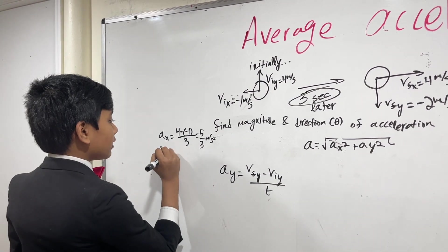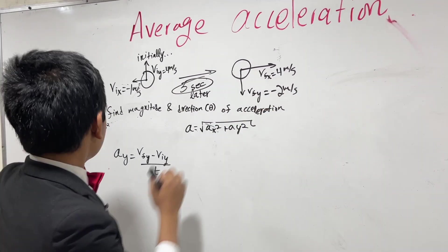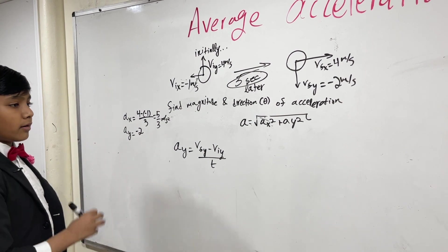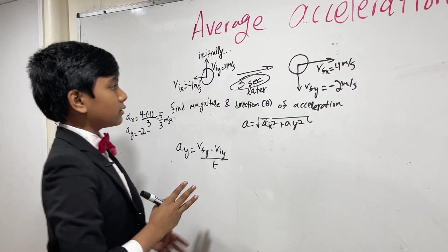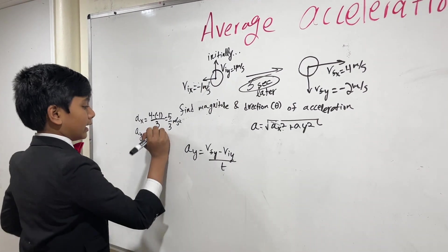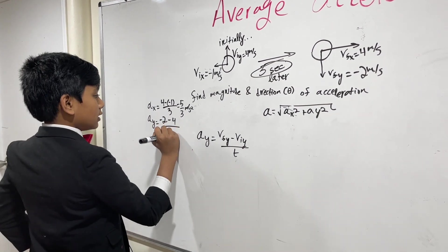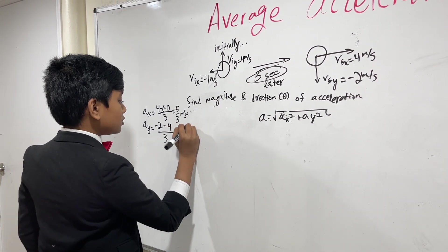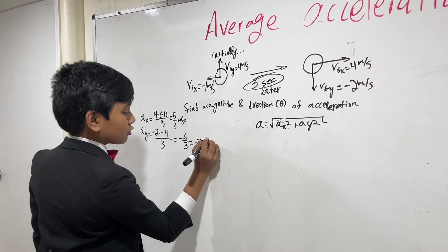And what about Ay? Well, we get minus 2. And then, for our initial, we have just plain old 4. So, we can put that over there. And do not call this racist. Over 3. So, that's minus 6 over 3. Which is minus 2 meters per second squared.